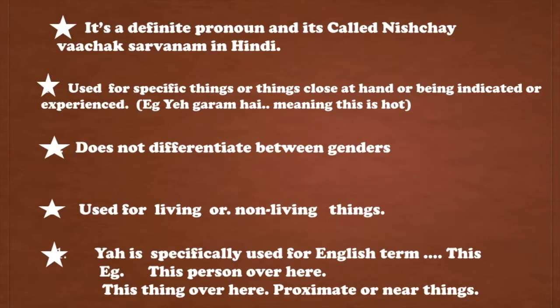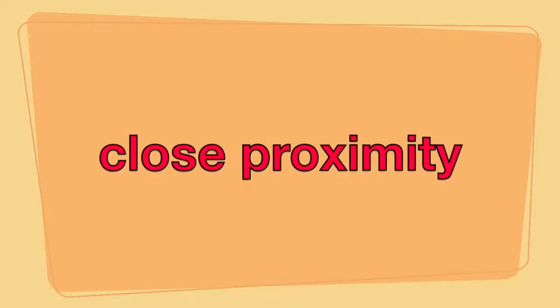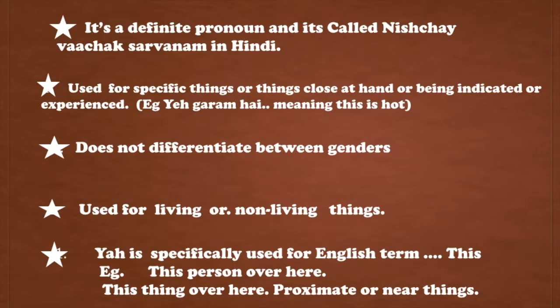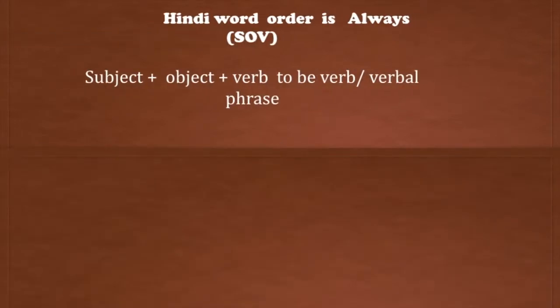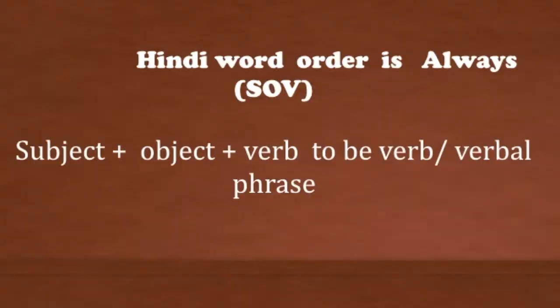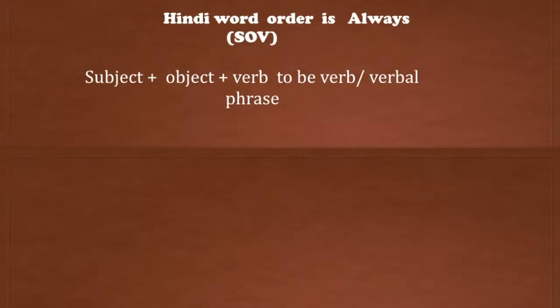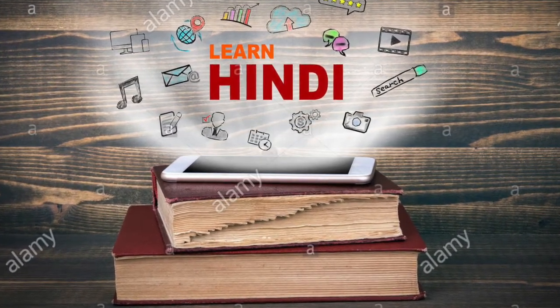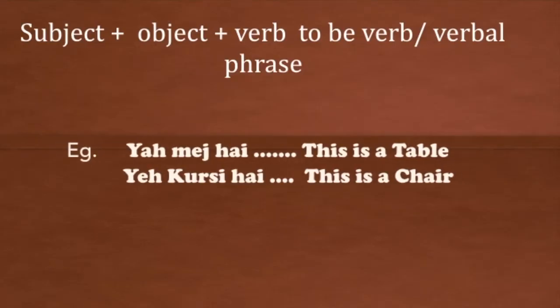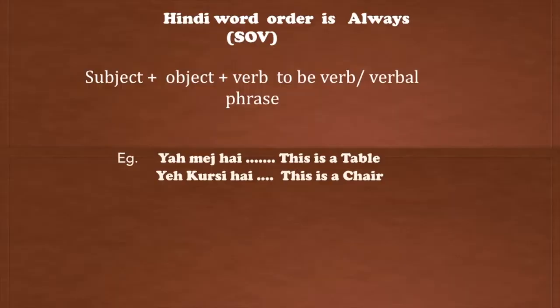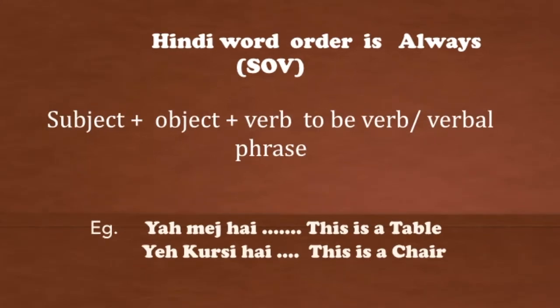Yaha is specifically used for the English term 'this' — this person, this thing — anything in close proximity. In Hindi, we always follow the order: subject, object, and to-be verb to form a sentence. Hindi and other Indian languages follow this same order, which is different from English. For example: yaha mej hai means 'this is a table,' yaha kursi hai means 'this is a chair.'